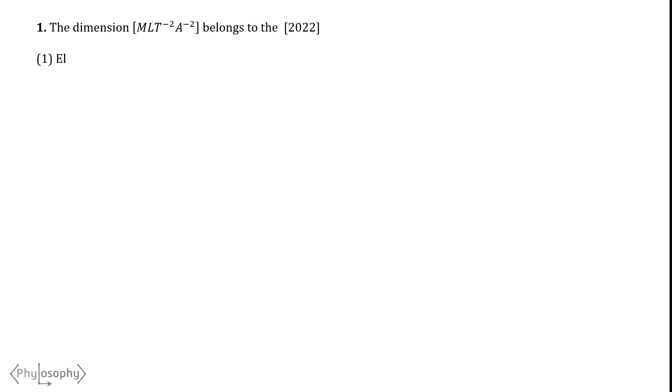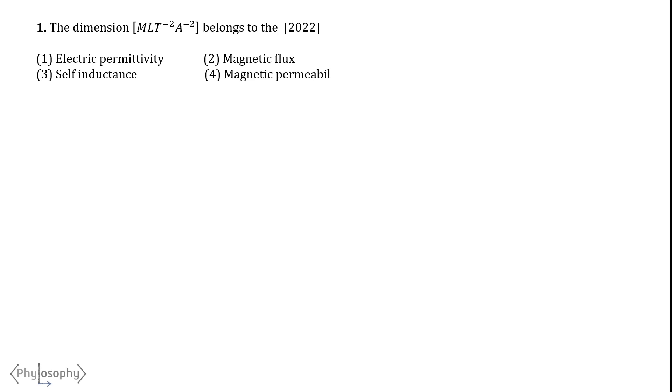The problem is: the dimensions MLT to the power minus 2, A to the power minus 2 belongs to which of the following — electric permittivity, magnetic flux, self-inductance, or magnetic permeability? That is, we need to identify the physical quantity whose dimensional formula is MLT⁻²A⁻². The correct answer is magnetic permeability.